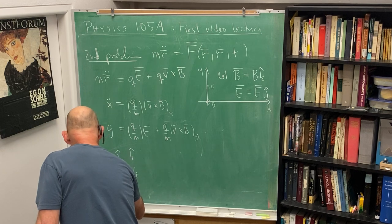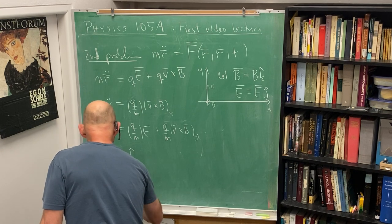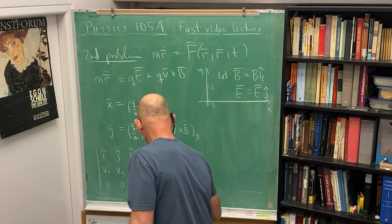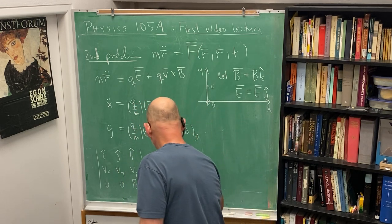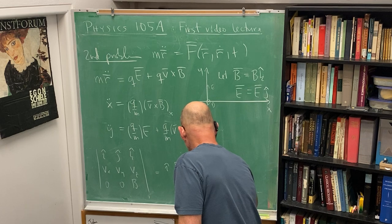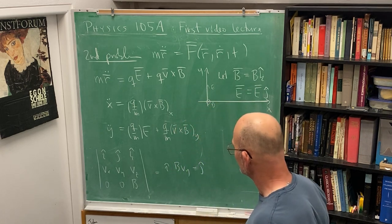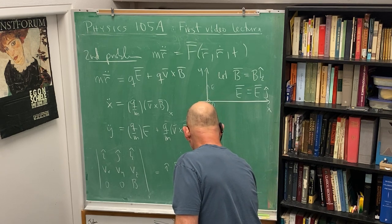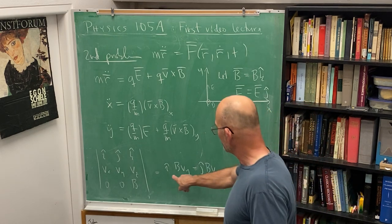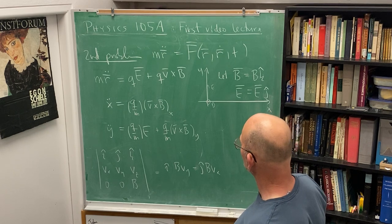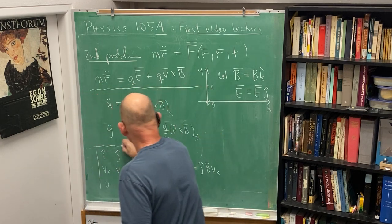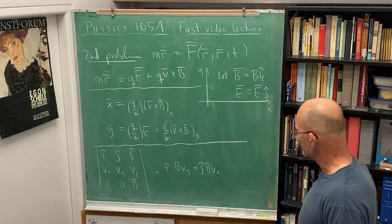We have to find these x and y components and we'll do that by doing the old determinant trick. So vx, vy, vz, and then 0, 0, B, because B only has the z component. So we get i hat times B times vy plus, actually I can put the minus sign out right now, minus j hat times B times vx. And the k hat will have nothing. So there is our v cross B.